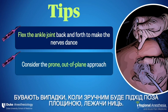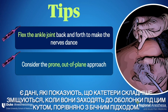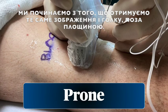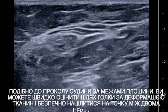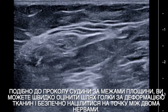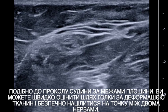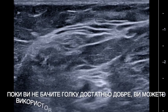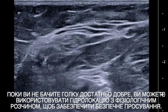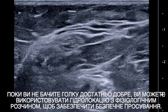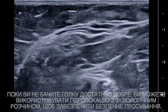There are times when the prone out-of-plane approach is convenient. There are data to show that catheters don't get displaced as easily when they approach the sheath from this angle compared to the lateral approach. We start by getting that same image and then a needle is brought out-of-plane. Just like an out-of-plane vascular puncture, you can quickly estimate the needle path by tissue deformation and safely aim for the point between the two nerves. While you won't see your needle all that well, you can use hydrolocation with saline to help stay safe as you advance.